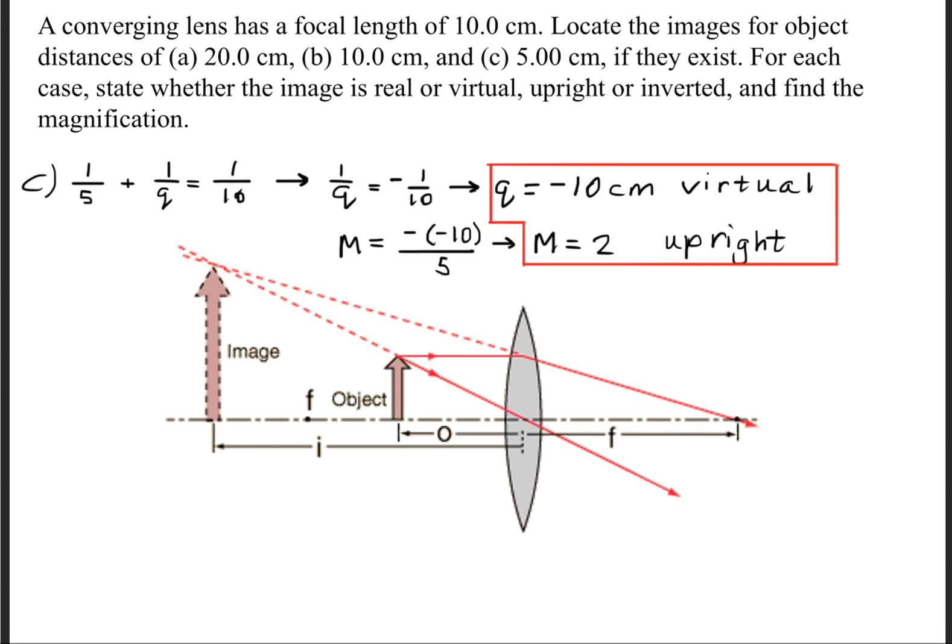So a ray diagram would look something like this. Notice that the object has to be inside of the focal point. This will create a virtual image rather than a real image where a real image would form on this right side. But because it's virtual, it's going to form behind the object.